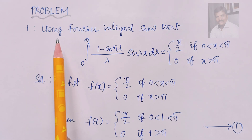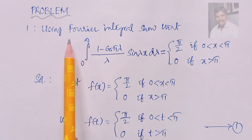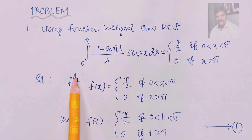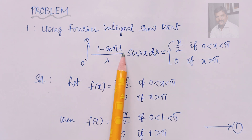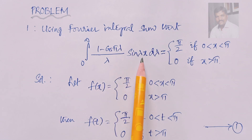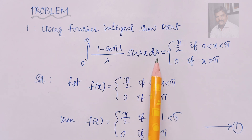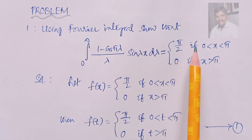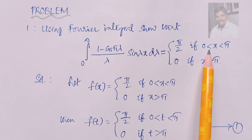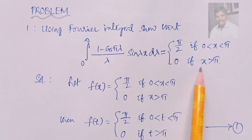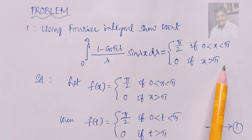Now take a look at the problem: using the Fourier integral, show that the integral from 0 to infinity of (1 minus cos(πλ)) divided by λ, times sin(λx) dλ, is equal to π/2 if 0 < x < π, and 0 if x > π.